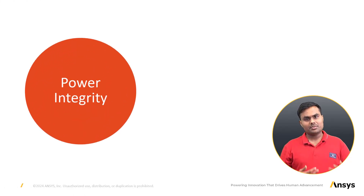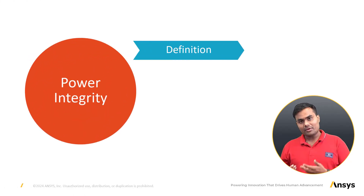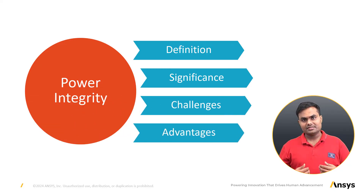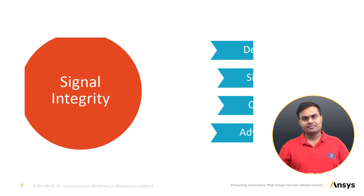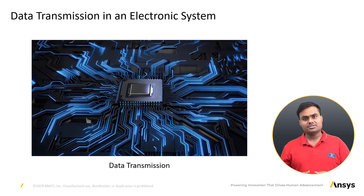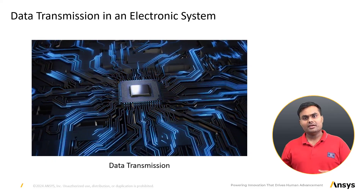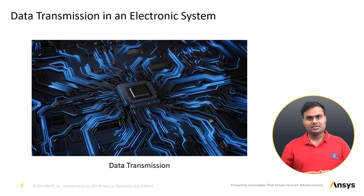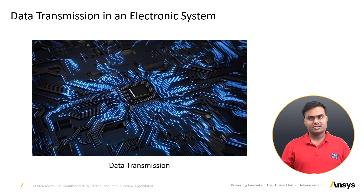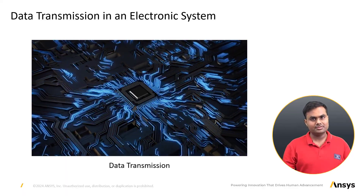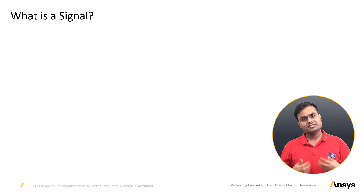So far we have discussed what power integrity is, why it is important, and its challenges and advantages. Now we'll discuss similar aspects of signal integrity. Here is a sample animation of how data transmission occurs in an electronic system. In an electronic system, different components exchange signals with each other. Signal integrity is essentially the ability of a signal to transfer information from transmitter to receiver.